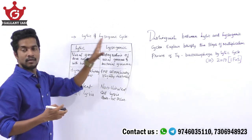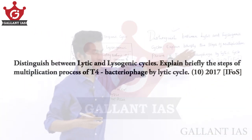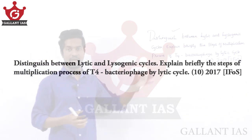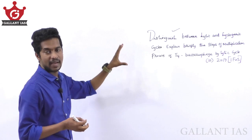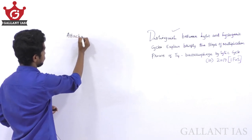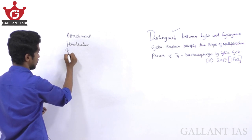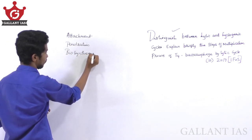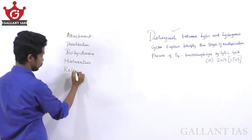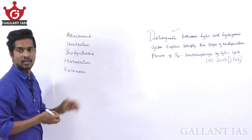Having addressed the differences, we move to the second part: the steps needed for the multiplication of T4 bacteriophage. T4 bacteriophage multiplies in five different steps: first, attachment; second, penetration; third, biosynthesis; fourth, maturation; and fifth, lysis (release).